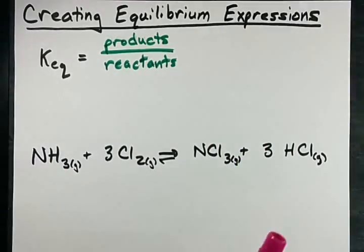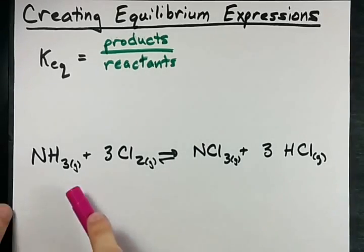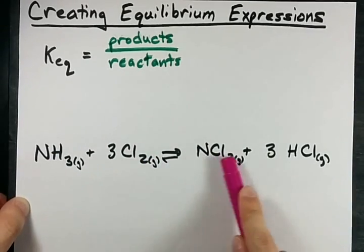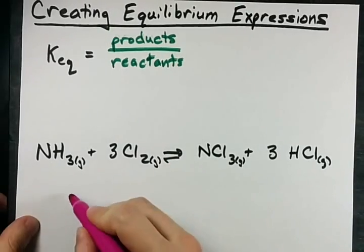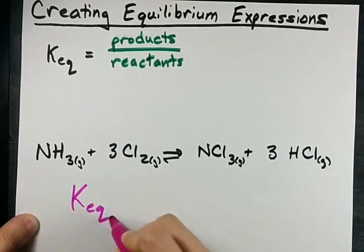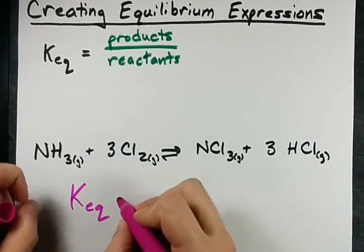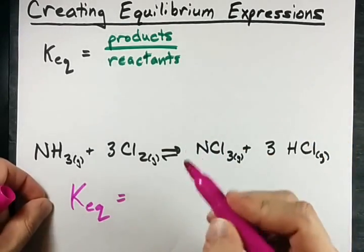You guys learn best by example so I'm going to do one with you. Products over reactants. It's an equilibrium because I have my double arrow so I can create my equilibrium expression KEQ. Products over reactants.